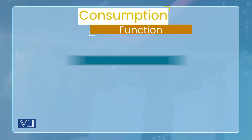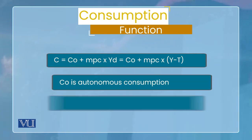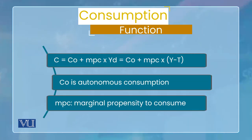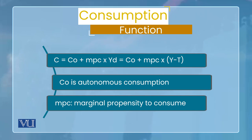So we write the consumption function as: C = C₀ + MPC × YD. Here C is consumption, C₀ is autonomous expenditure, MPC is marginal propensity to consume — and I will define it later — multiplied by disposable income YD. And disposable income is income minus tax.